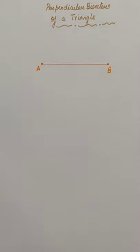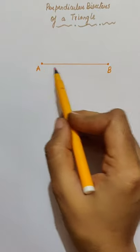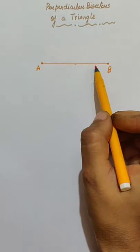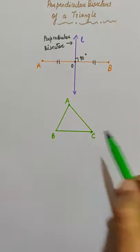First consider segment AB. A perpendicular bisector is a line that divides this segment AB into two equal parts and is perpendicular to segment AB. A triangle has three sides.